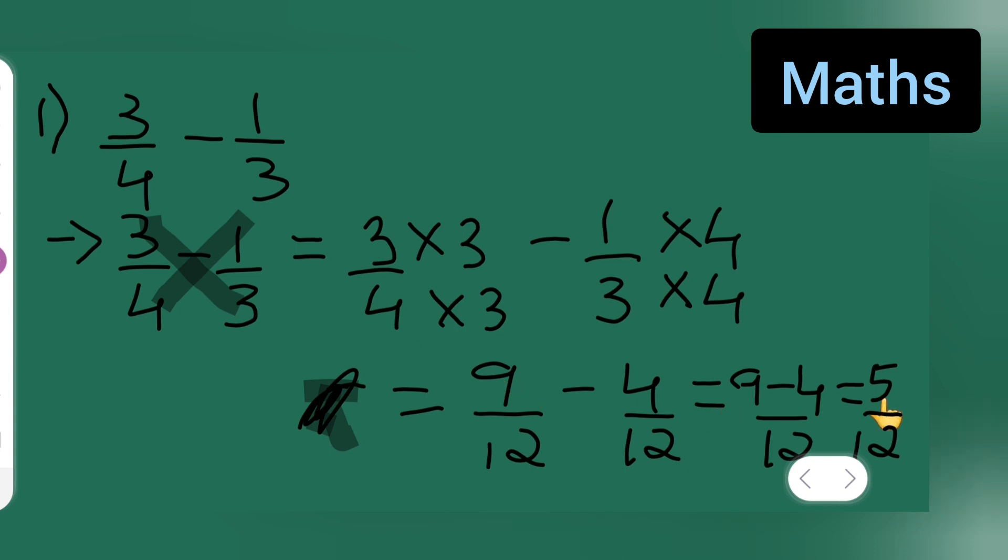So basically your answer is 5 upon 12. I hope you all have understood how to do this, and you all can tick down. Thanks for watching you.